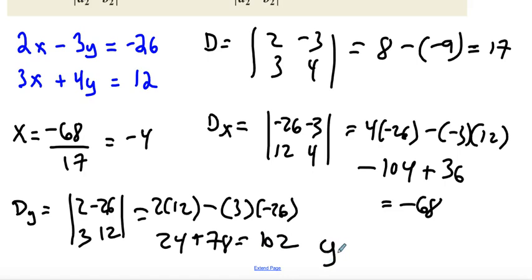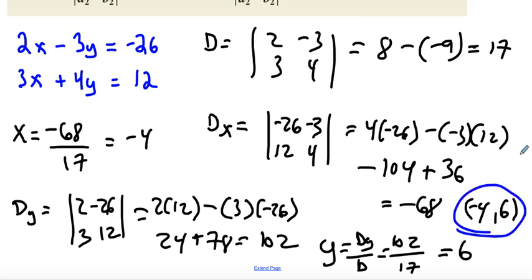So if I want to find y, y is d of y over d. So the determinant of y is 102, d was 17. So that right there would then give us 6. So our answer, it's always a coordinate point here, it's going to be our x and y number. So our x is negative 4 and our y is 6. And this right here would be what we're looking for.